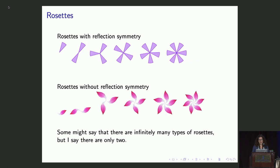And some might say that there are infinitely many types of rosettes, but I say there are really only two: the rosettes with reflection symmetry and the rosettes without reflection symmetry. Or you might say there are two infinite families of rosettes with the parameter n that tells you the order of the rotation.